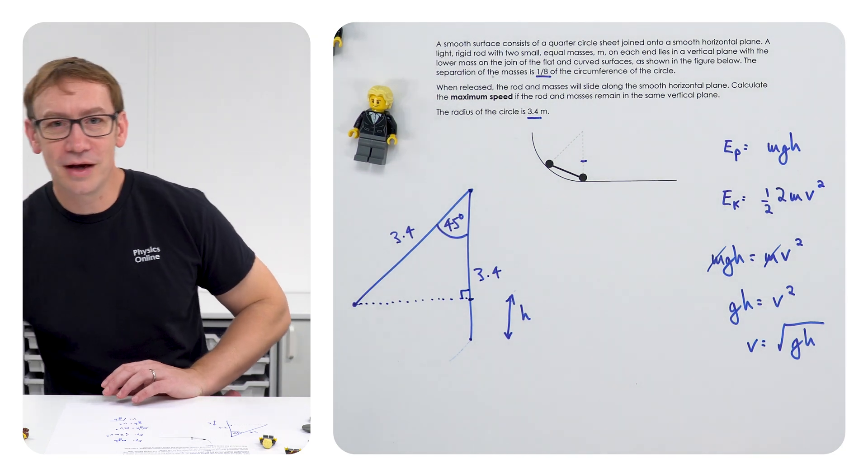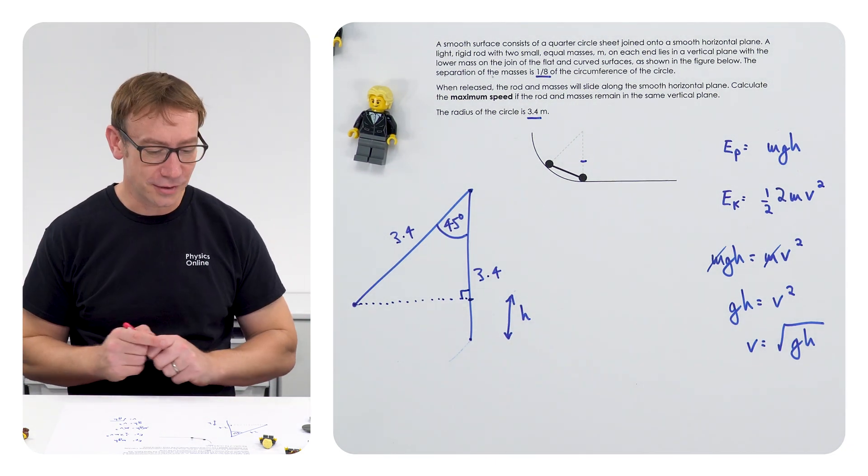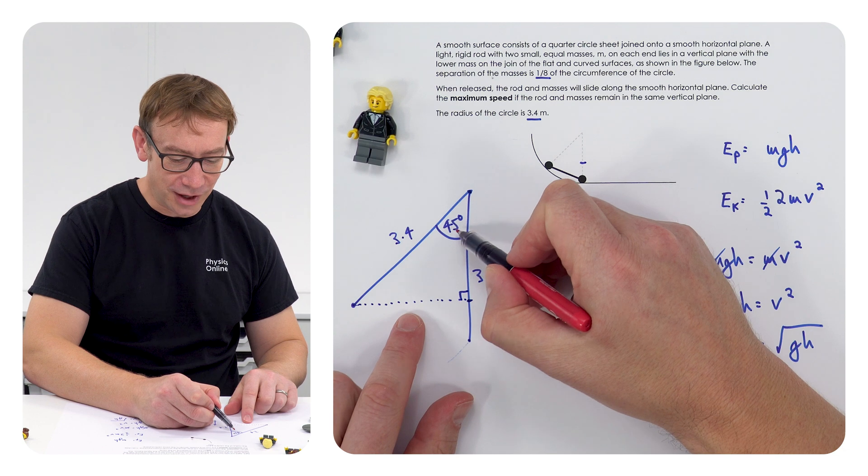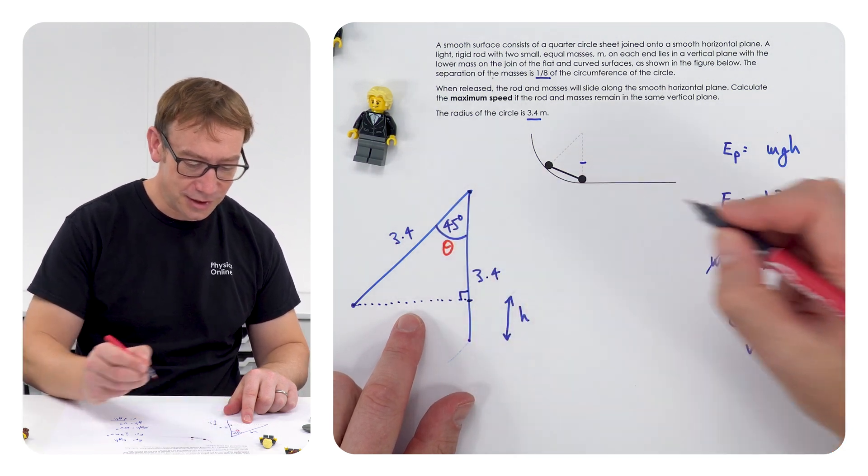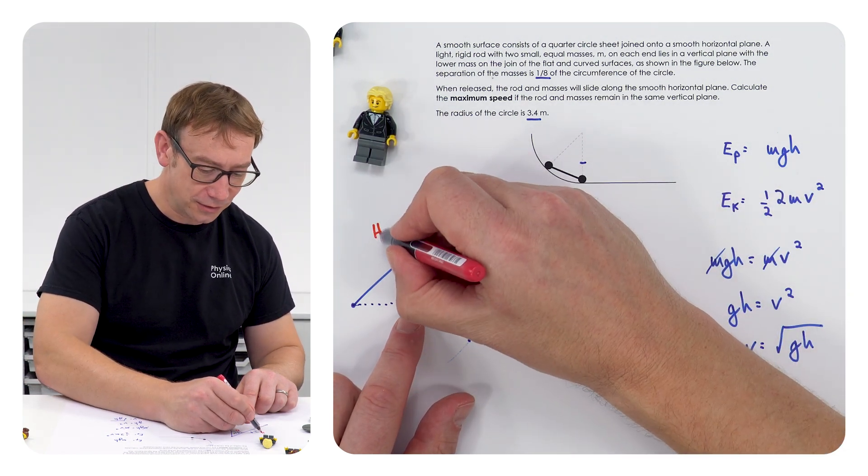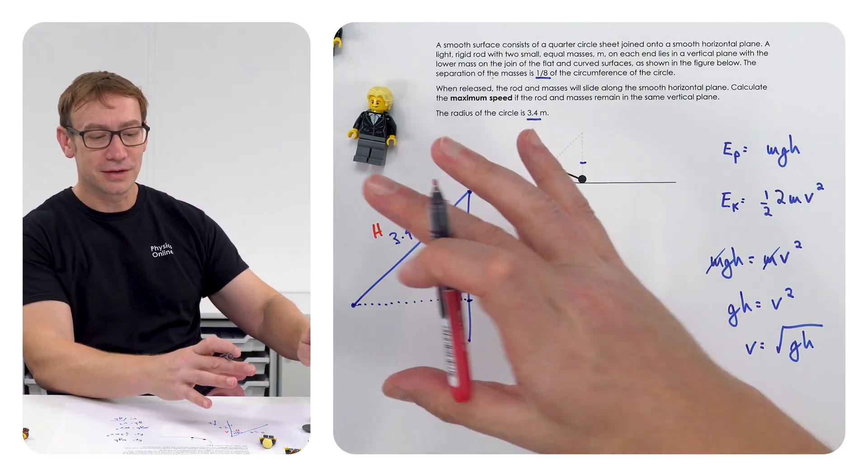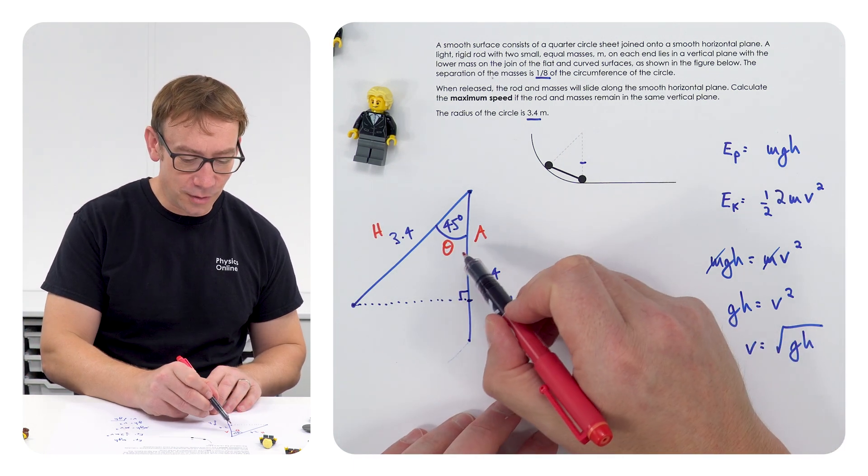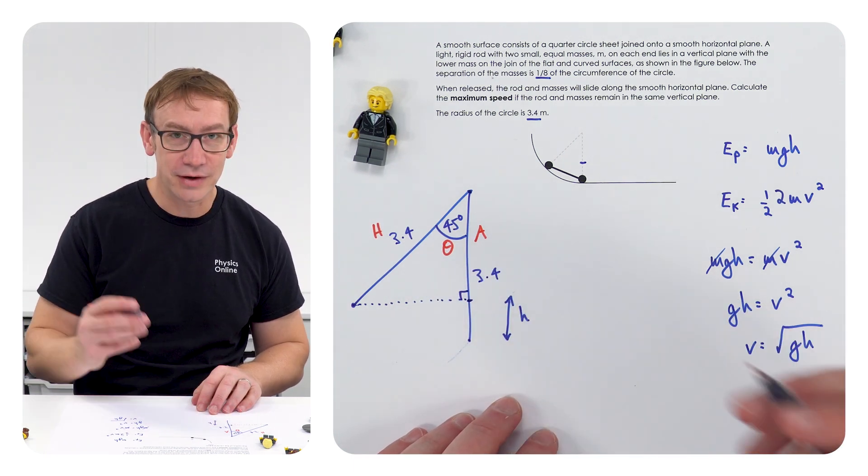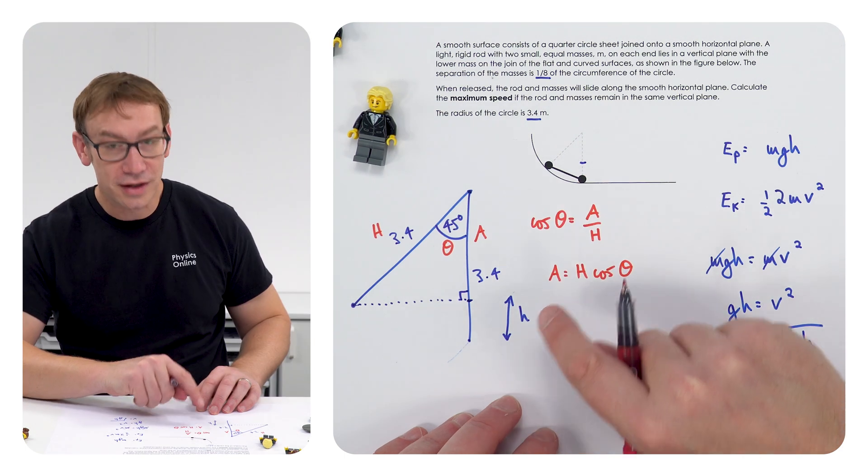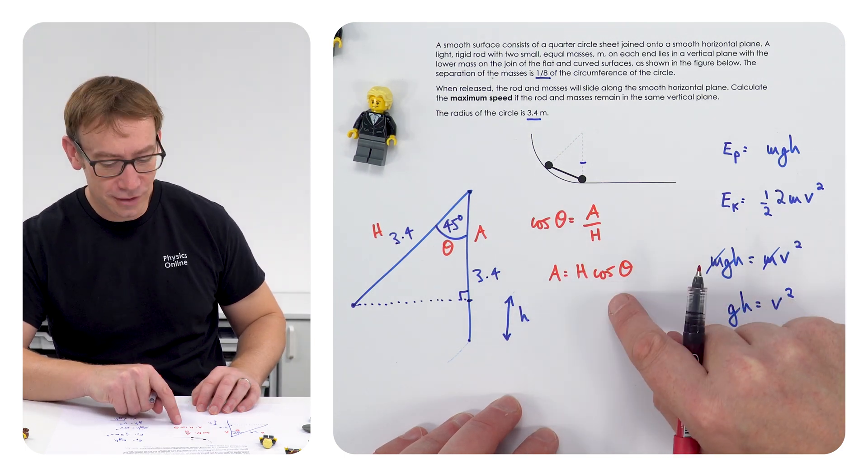Again this is where we're going to be using some GCSE maths looking at SOHCAHTOA. We've got this angle which I'm just going to label as theta. We've got the hypotenuse and we want to know the adjacent side. So again labeling on the diagram saves lots of hassle later on. We know theta and h. We want to know a, so we can use cos where this adjacent side equals h cos theta.